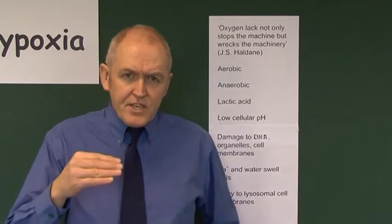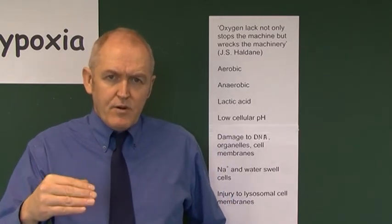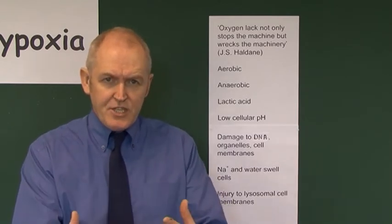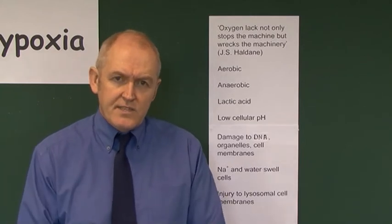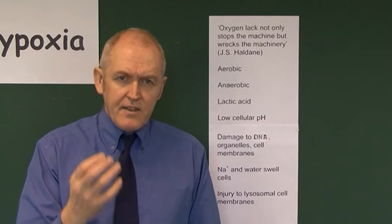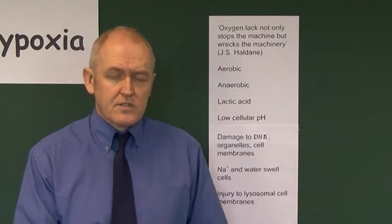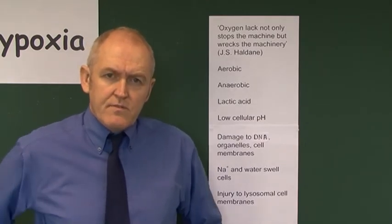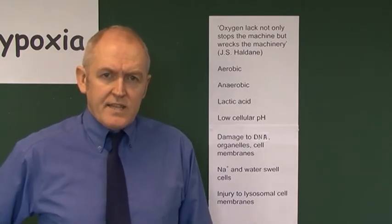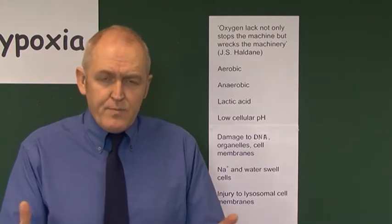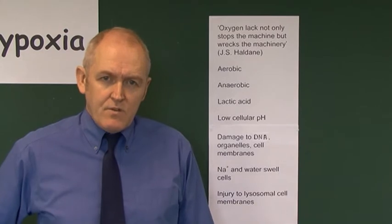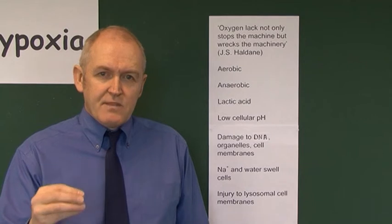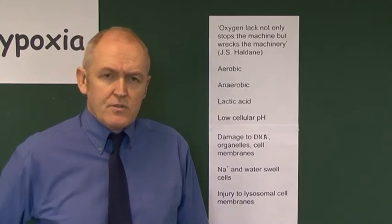Initially, the cells will swell up when they're hypoxic, and at that stage it's reversible. If you can get oxygen into your patient at that stage, you will save the viability of their tissues — the damage will not occur if you can restore the oxygen supply. If not, and the hypoxia is prolonged, the damage to the cells will become irreversible and there will be cell death. That tissue will die. Remember: oxygen lack not only stops the machine from working, eventually it wrecks the machinery — it will cause tissue necrosis.